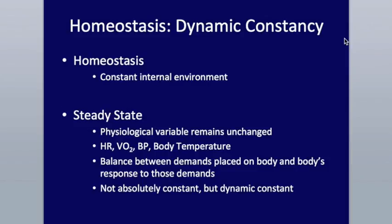There's a balance between the demands placed on the body and the body's response to those demands. If something happens where the body starts to become a little bit out of whack — when one of these variables becomes a little bit high or low — the body will try to respond and either increase or decrease back to a normal level. Keep in mind it is a dynamic constant, not an absolute constant. Your body temperature is going to be fluctuating, but that average should remain linear.